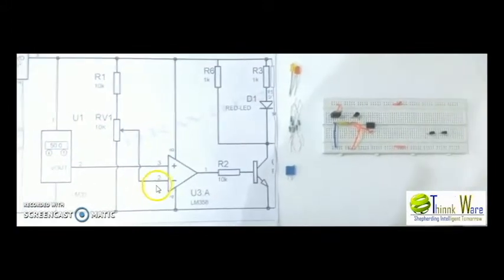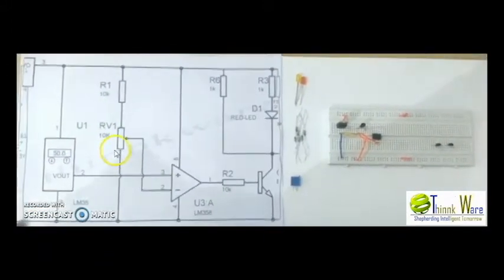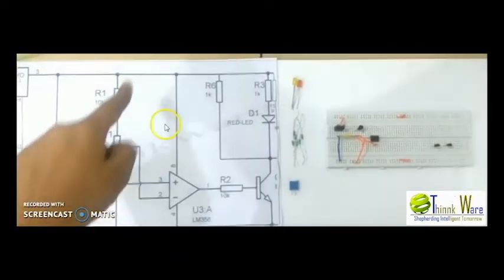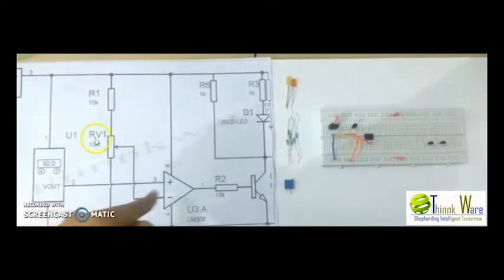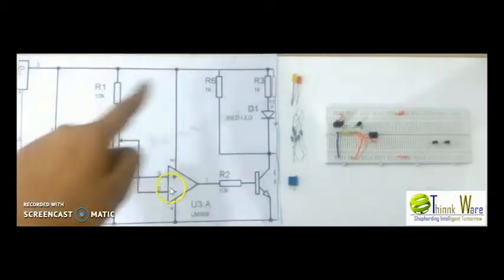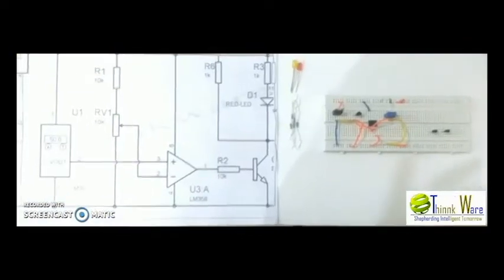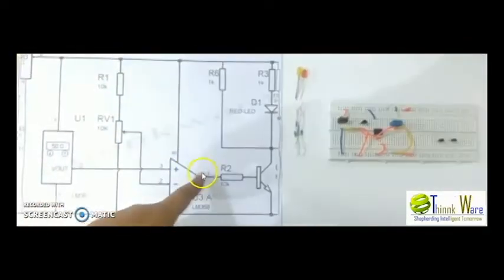After making all those connections, as we can see, there is a variable resistor whose one end is connected to negative terminal and one end through a resistor to positive terminal. And the middle end is connected to pin 2 and pin 4 is connected to negative terminal and pin 8 is connected to the positive terminal.